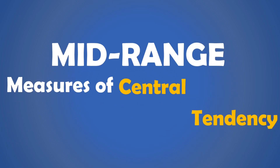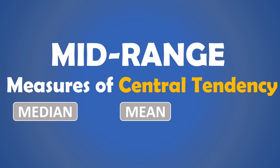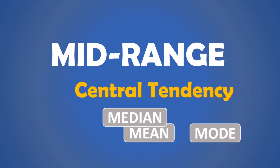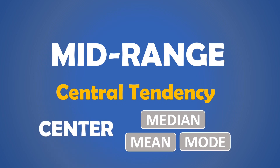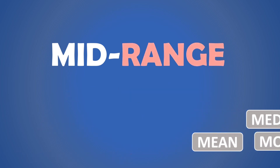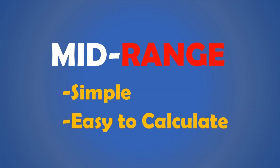The mid-range is one of the measures of central tendency, but is not as common as the mean, median, and the mode. As a measure of central tendency, it provides a simple estimate of the center or typical value of a data set, but we need to know that it is not as robust as the other common measures because it is more sensitive to outliers. And just like the range, the mid-range is a simple and easy to calculate measure.